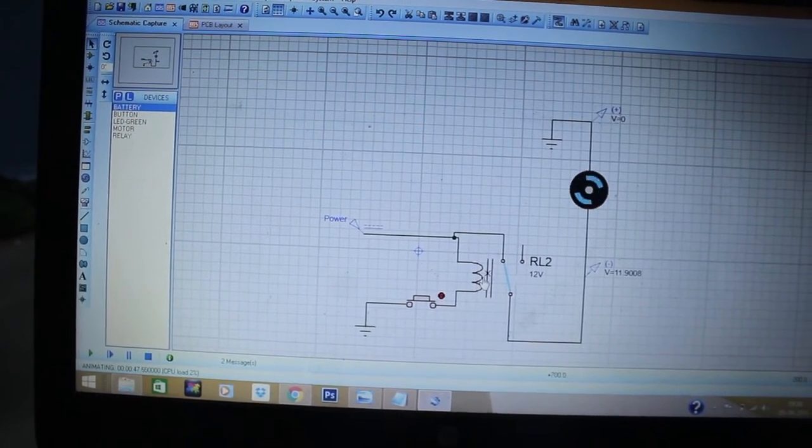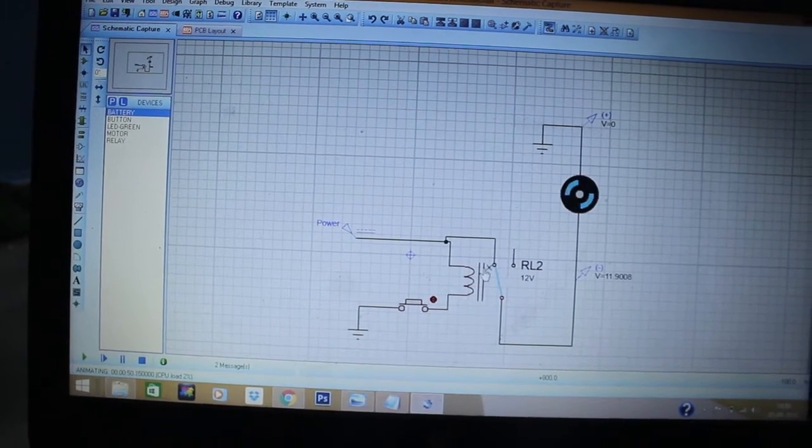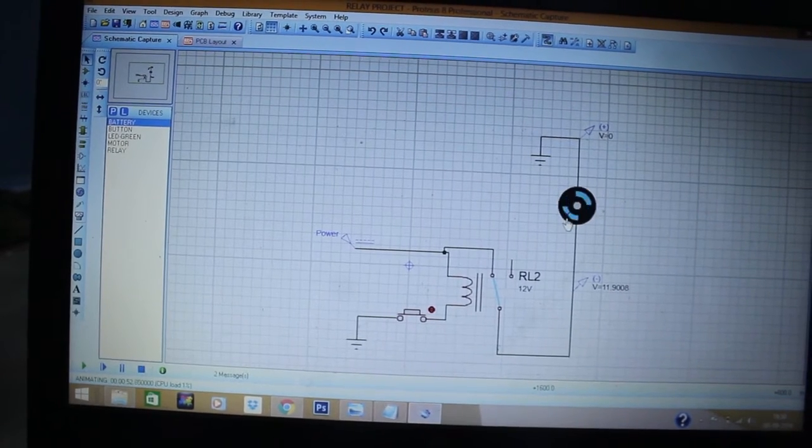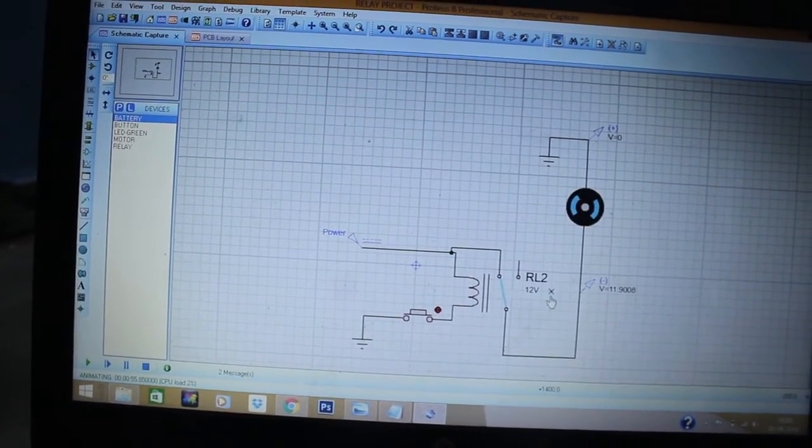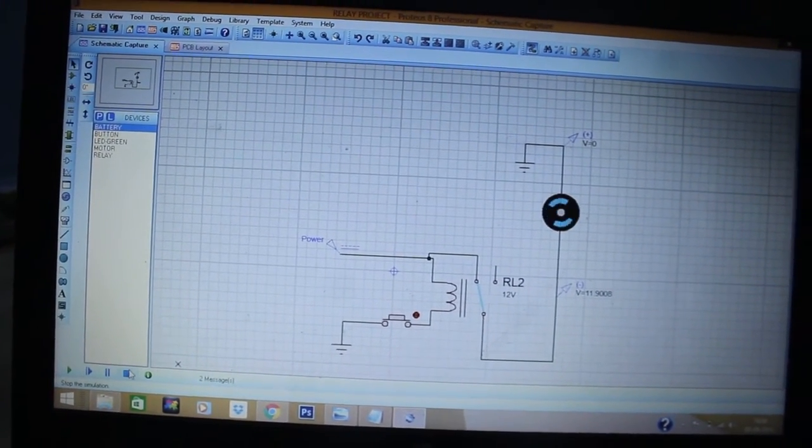The coil gets energized and the normally closed part is released and it connects to the normally open part, so the circuit gets closed and my load gets activated. This is the simple operation of the relay. This is the basic principle behind this project. I will show you the circuit diagram for your better understanding.